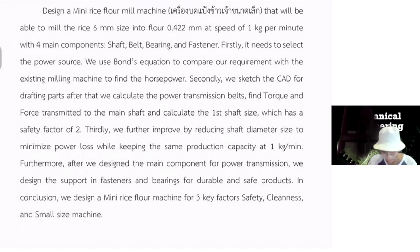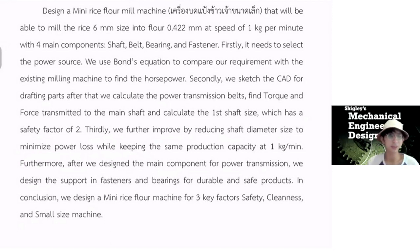After that, thirdly, we further improve to reduce the size of the shaft for economy factor and minimize the power loss so we can get the most efficiency of our shaft. First of all, we decide the main component for power transmission. We decide the support infrastructure and bearing for durable and safe product so we can trust our product. In conclusion, we decide we need rice flour machine for three key factors: safety, cleanliness, and small size machine.